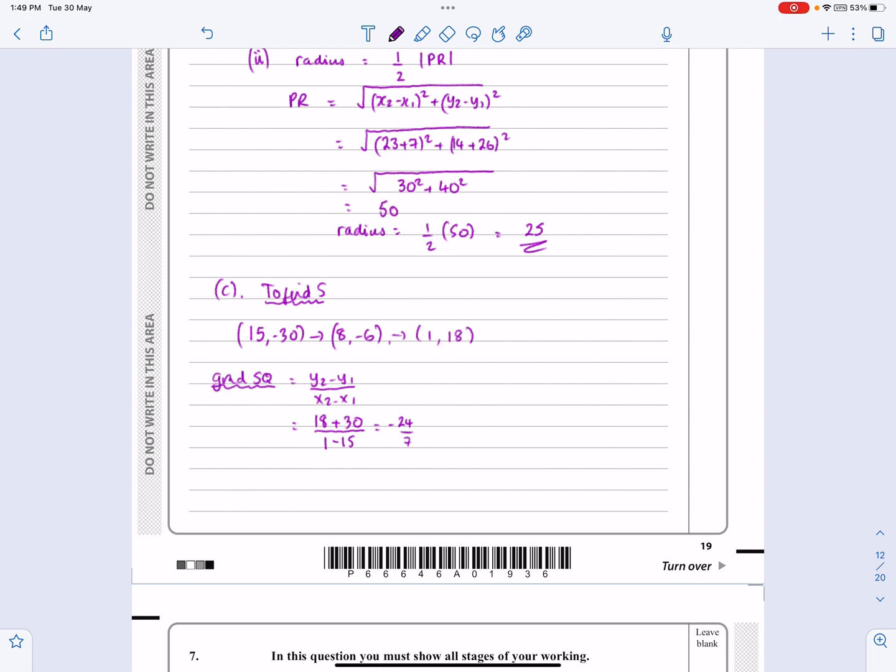So if that's true, the gradient of the tangent will be minus 1 over that. So in other words, will be 7 over 24. So to finish this question off, I'm actually just going to do it down here. I know it's going to look a little bit messy, but I'm going to do it down there then to actually work out the equation of this one. The equation of the tangent is Y minus Y1 equals M times X minus X1. What have I got? I've got X1, Y1. Other points, 1, 18. I've got the M is 7 over 24 here.